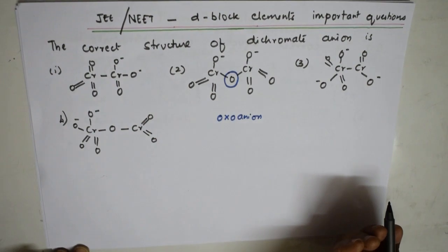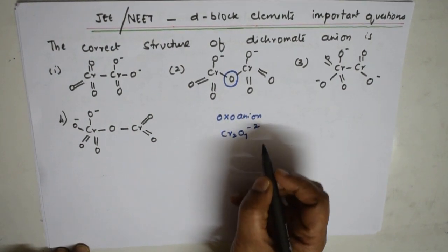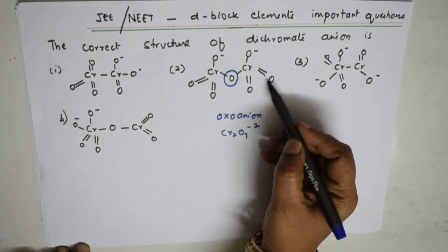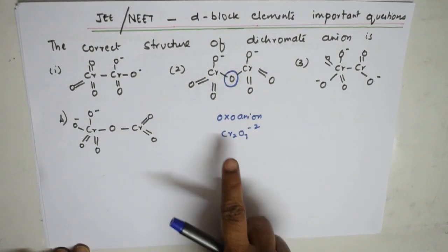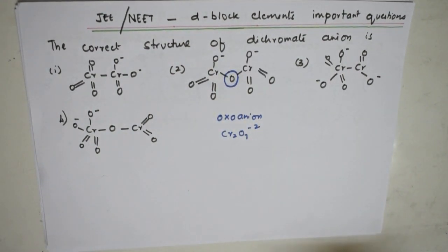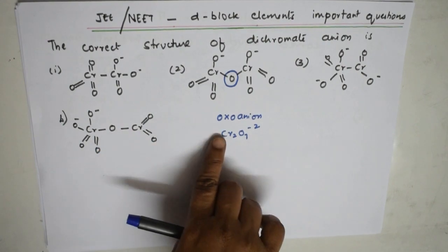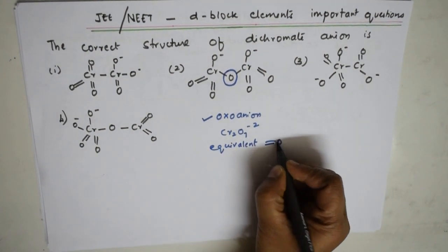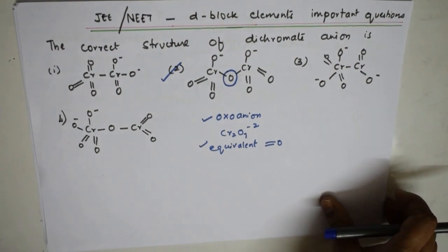In the dichromate structure CR₂O₇²⁻, between the two chromium atoms there is one bridging oxygen, and on each chromium there are two equivalent double-bond oxygens plus one O⁻. So counting: 1 bridging + 2 + 2 + 1 + 1 = 7 oxygens total, giving CR₂O₇ with charge minus 2. The correct structure has an oxoanion at the center and equivalent double-bond oxygens on both sides.